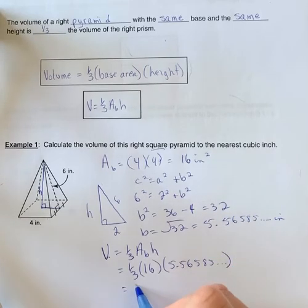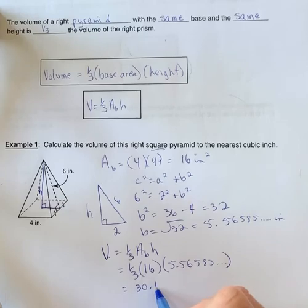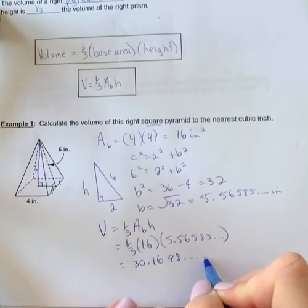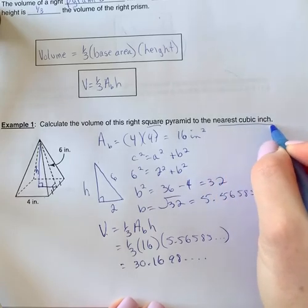And in your calculator, once you do that, you're going to get 30.1698, etc. So when you round off to the nearest cubic inch,